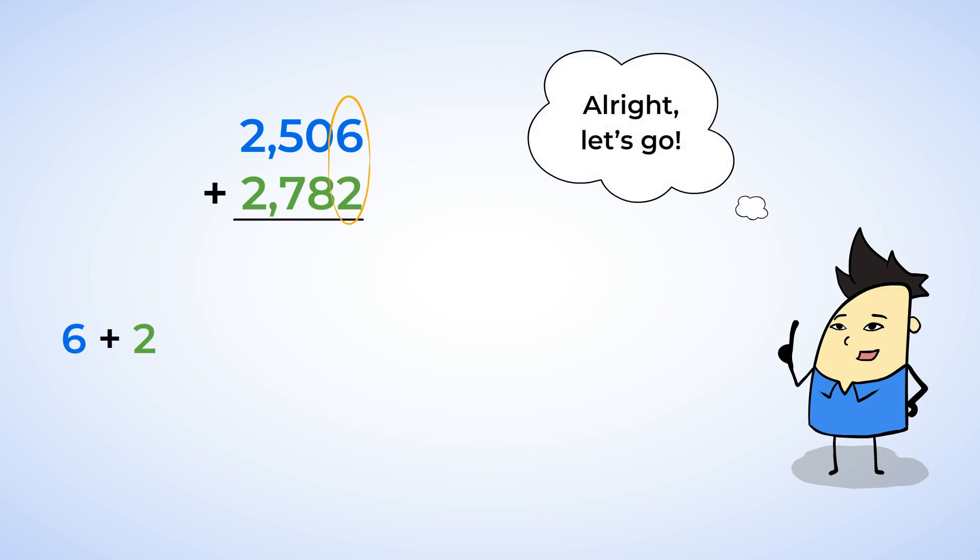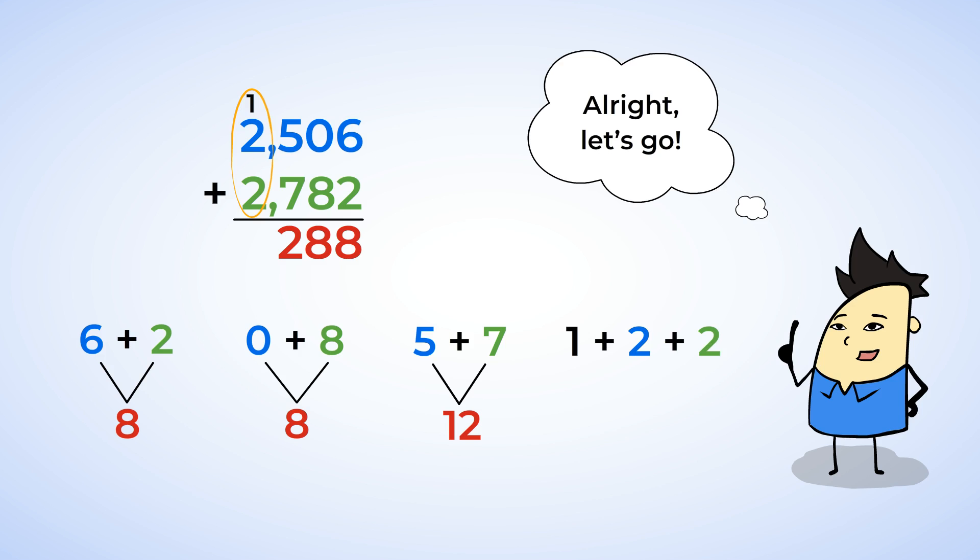6 plus 2 is 8. Place that under the ones. 0 plus 8 is 8. That goes in the tens place. 5 plus 7 is 12. Okay, now be careful. The 2 goes in the hundreds place, and the 1 gets carried over to be added with the thousands. Now, 1 plus 2 plus 2 is 5. Our final answer is 5,288. Great job!